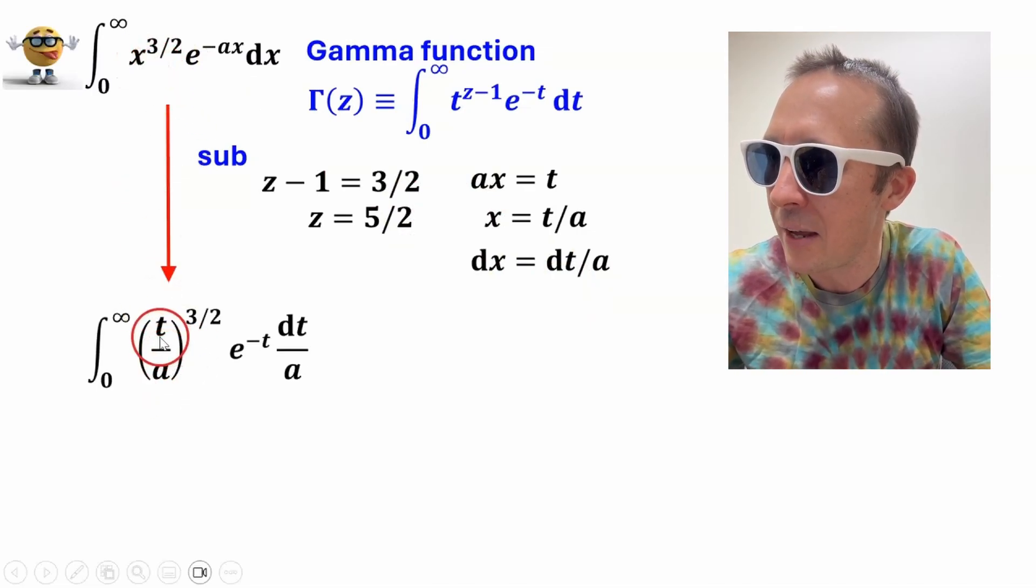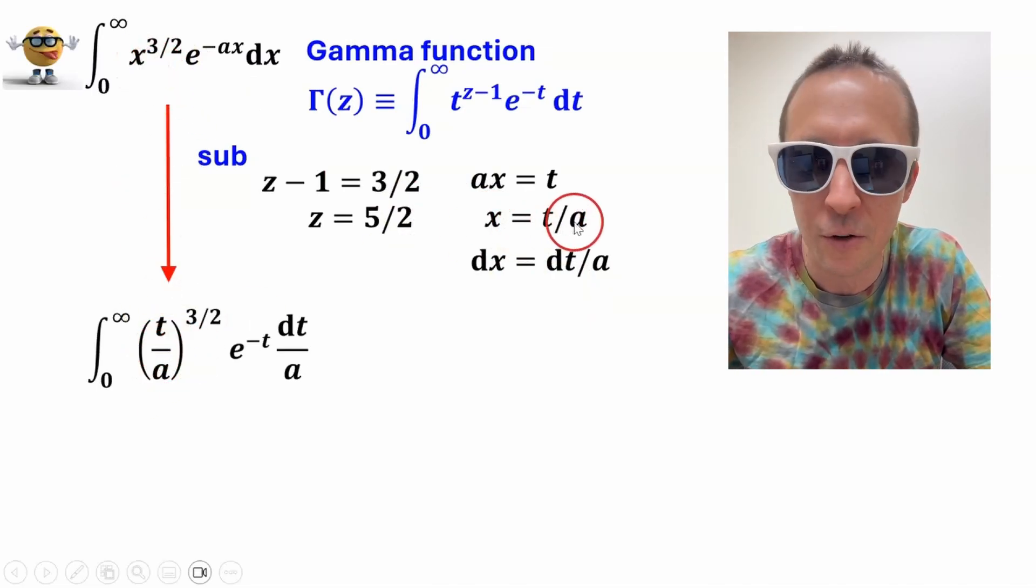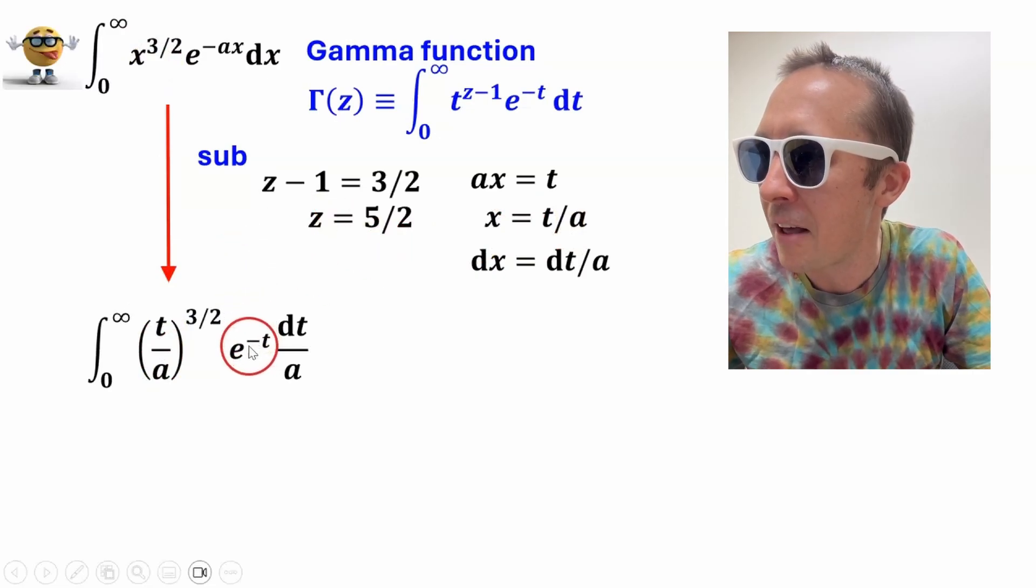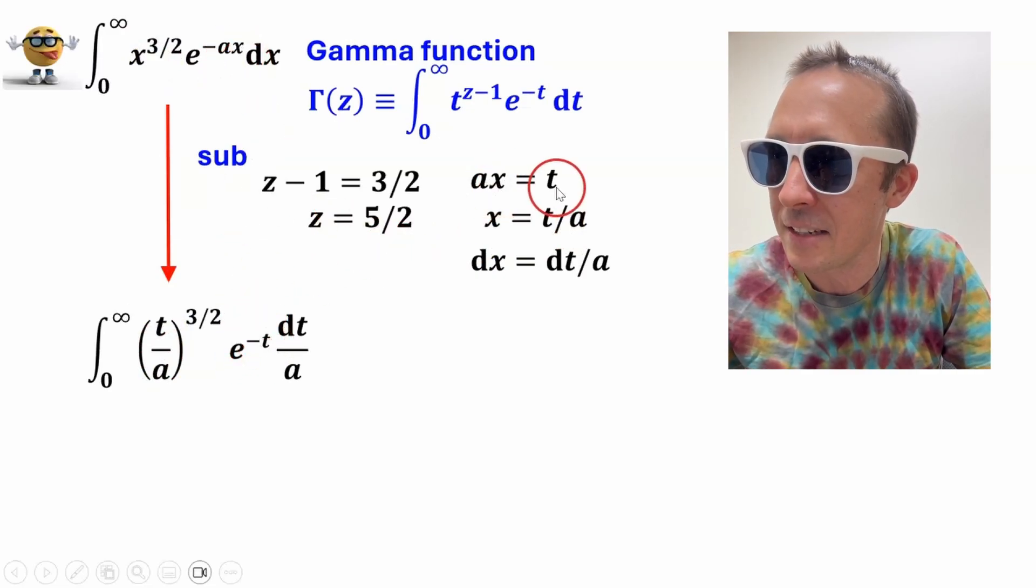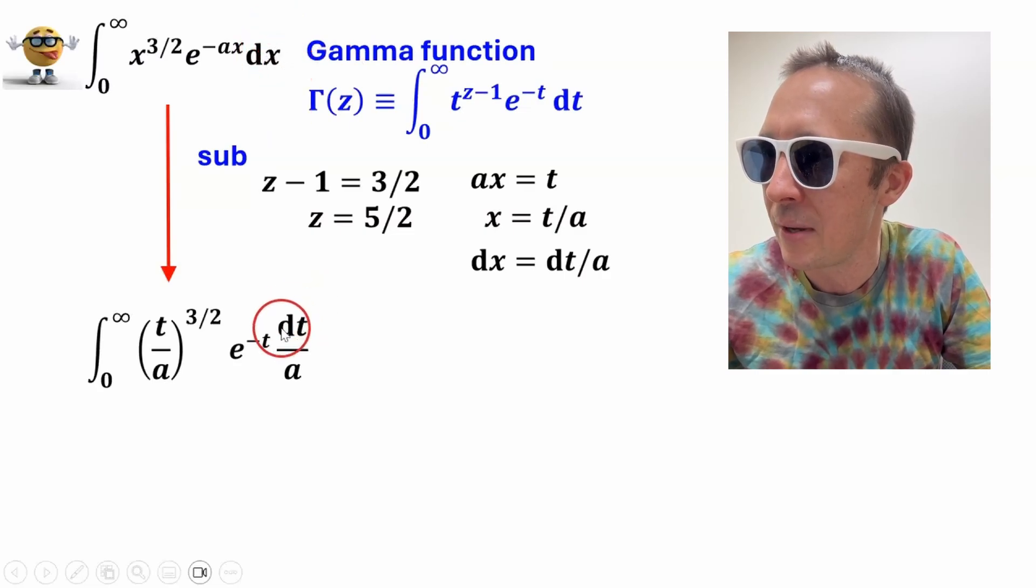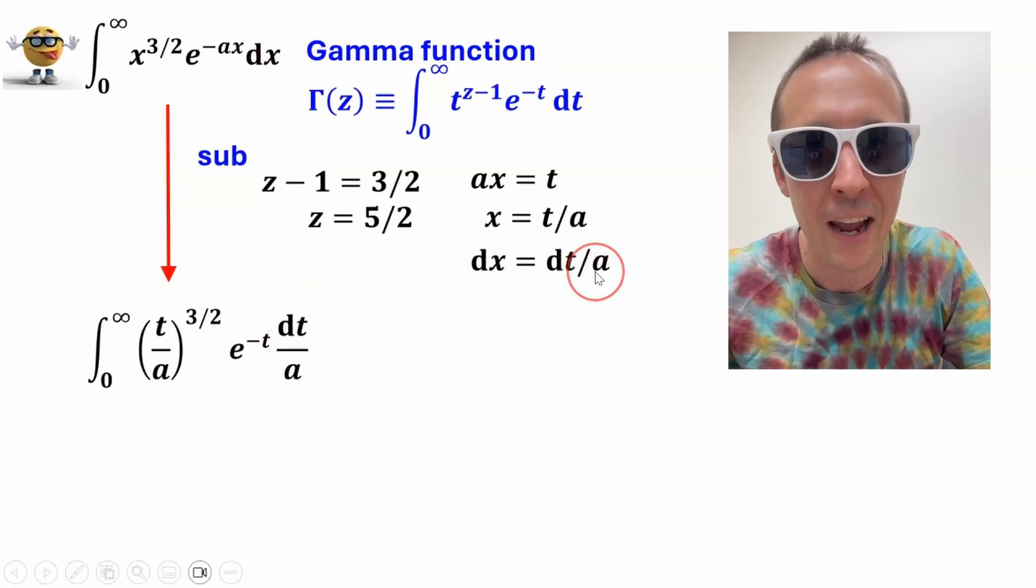so rather than x, we have t over a, because x is t over a, and rather than e to the negative ax, we have e to the negative t, because ax equals t, and rather than dx, we have dt over a, because dx is dt over a,